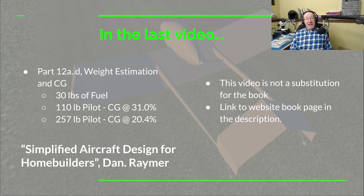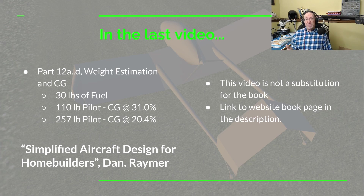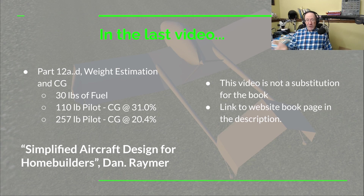If you want to get Dan's book and wouldn't mind helping out the channel, there's a link in the description to the Ultralight Airplane Workshop book page. There are a few books on that page — not just Dan's. Another one to consider is Chris Hines' book Fly Your Old Wings, and another on Stress Without Tears. Those are Amazon Associates links, so if you use them to buy a book, the Ultralight Airplane Workshop will get a small commission.